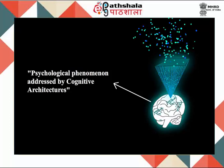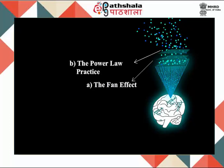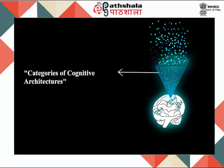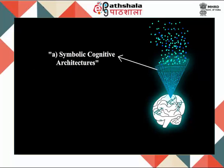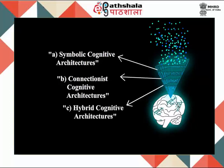Psychological phenomena addressed by cognitive architectures include: a. The fan effect, b. The power law of practice, c. Categorization. And 3. Categories of cognitive architectures, which includes: a. Symbolic cognitive architectures, b. Connectionist cognitive architectures, c. Hybrid cognitive architectures.